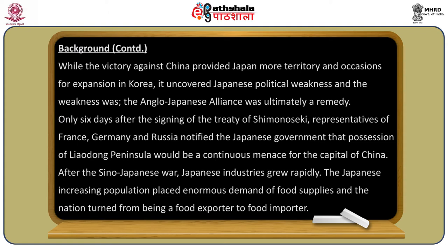While the victory against China provided Japan more territory and more occasions for expansion in Korea, it also uncovered Japanese political weakness. The Anglo-Japanese alliance was ultimately a remedy. Only six days after the signing of the Treaty of Shimonoseki, representatives of France, Germany, and Russia notified the Japanese government that possession of the Liaodong Peninsula would be a continuous menace to the capital of China.